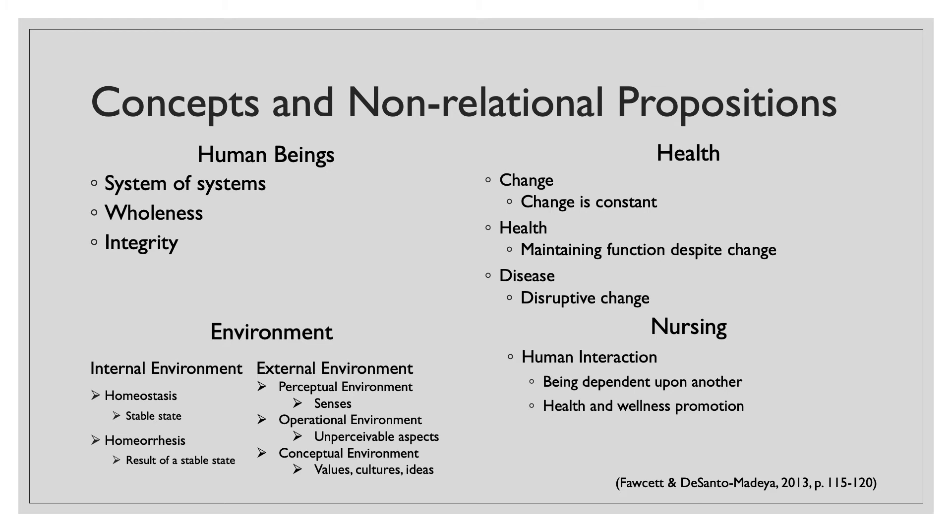The environment includes the internal environment and the external environment. Within the internal environment, Levine talks about homeostasis and the person's ability to be stable within their environment — this is a stable state. Homeoresis is a state of flow that is never stagnant, and homeoresis is achieved because of homeostasis. Within the external environment, Levine discusses the perceptual environment, which includes all of our senses; the operational environment, which are those things that we can't see like bacteria, germs, and pollutants; and the conceptual environment, which embodies our values, cultures, ideas, and psychological responses that we learn throughout life.